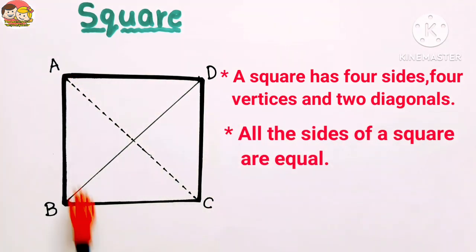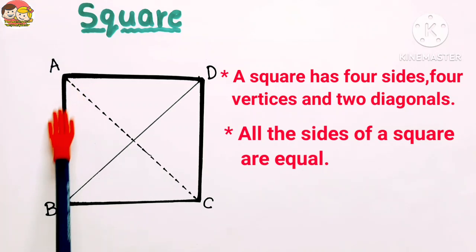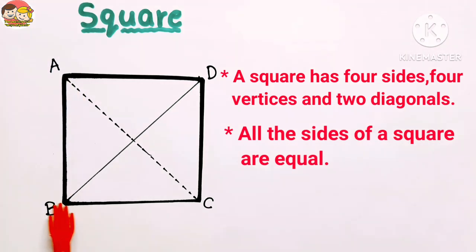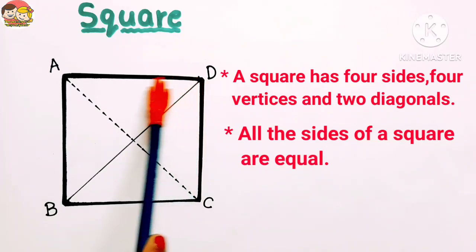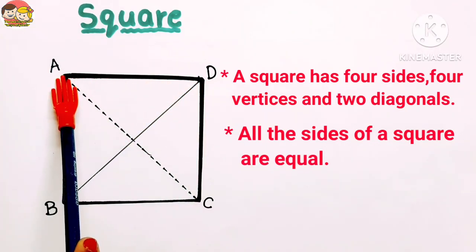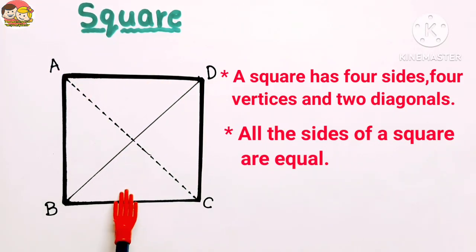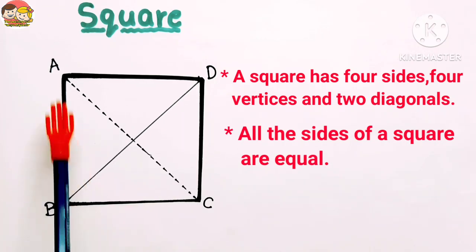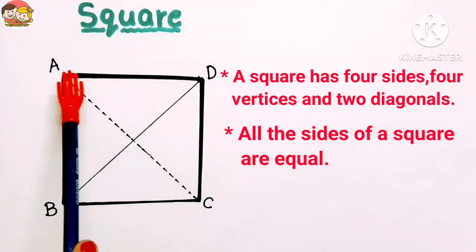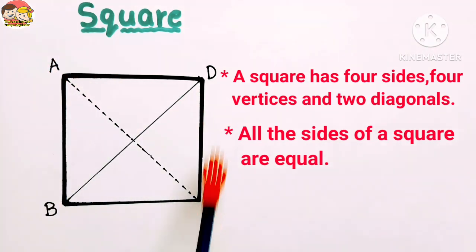All the sides of a square are equal. So here AB is equal to BC is equal to CD is equal to DA. So this is a square, and a square has four equal sides, four vertices, and two diagonals.